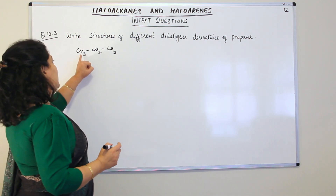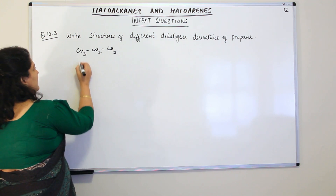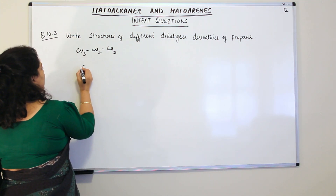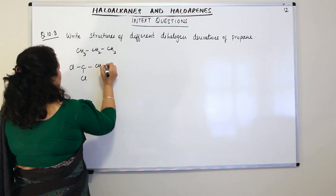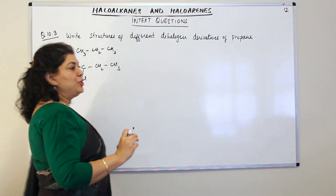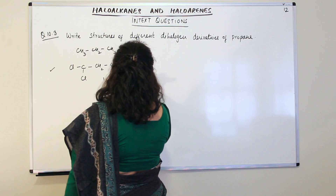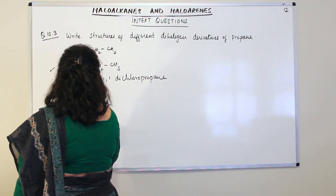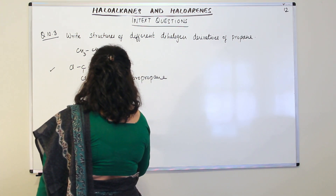Since it is di-substituted, you have the option of substituting two hydrogens, giving various isomers. First case: both halogens on the first carbon — CHCl₂CH₂CH₃ — this is 1,1-dichloropropane. Second isomer: both chlorines on the second carbon — CH₃CCl₂CH₃ — this is 2,2-dichloropropane. Note that IUPAC names always start with a capital letter.